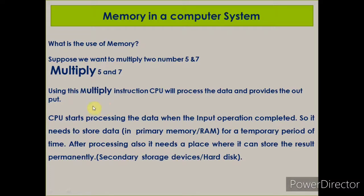The number 5 is stored in RAM — the primary memory — for a temporary period of time. When the input operation is complete, the CPU starts processing the data and gives us the output. After processing, it needs a place to store the result permanently, which means we use secondary storage devices. Generally, we store the data in our hard disk.